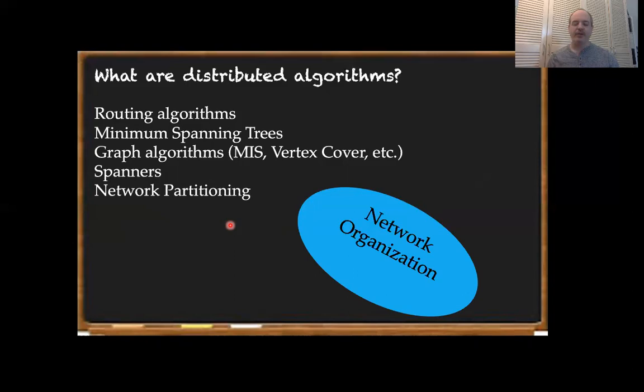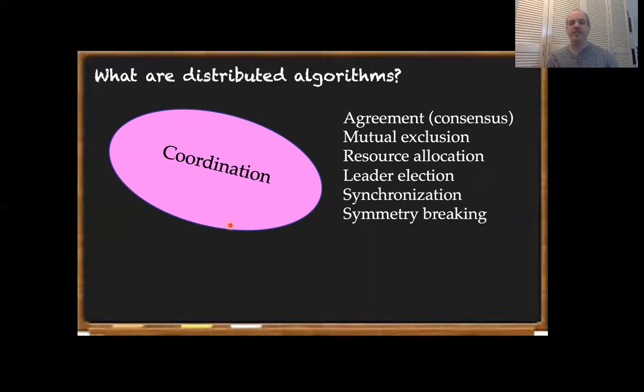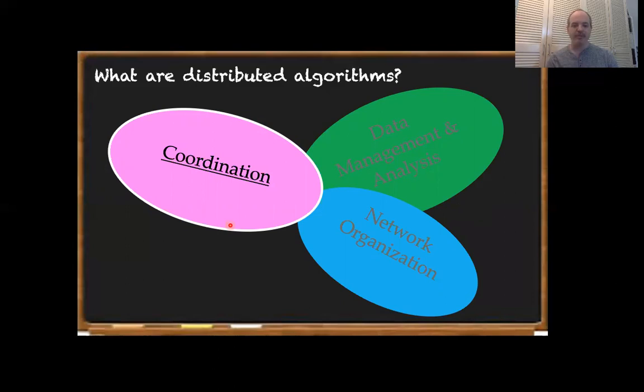On the network organization front, you get problems like routing, minimum spanning trees, graph algorithms, spanners, and network partitioning — these are network related algorithms. What I want to talk about today is coordination protocols: things like agreement or consensus protocols. If you've been paying attention to Bitcoin and blockchains, you've heard a lot about consensus. Problems like mutual exclusion, resource allocation, leader election, voting, synchronization protocols, symmetry breaking, and coloring protocols. These are all coordination protocols.